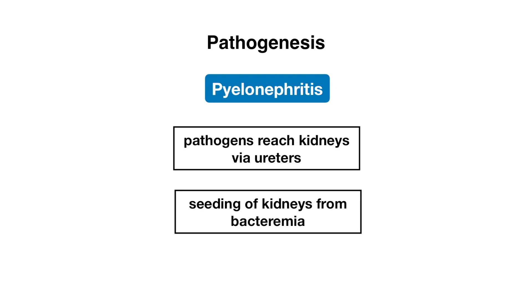When it comes to pyelonephritis, this can occur in one of two ways. Those same pathogens from fecal flora can reach the kidneys via the ureters, or this can occur from seeding of the kidneys from bacteremia.